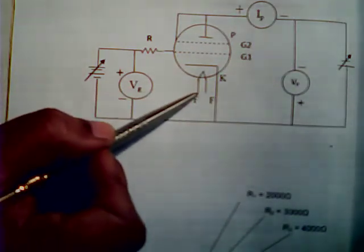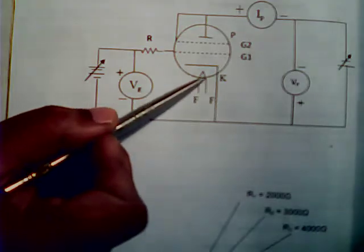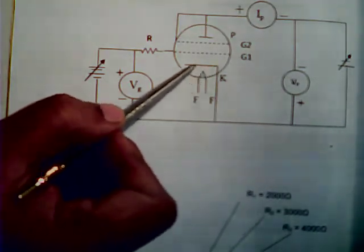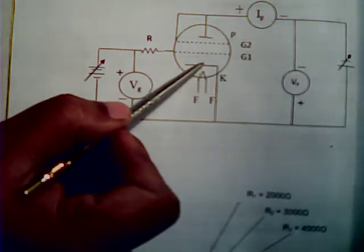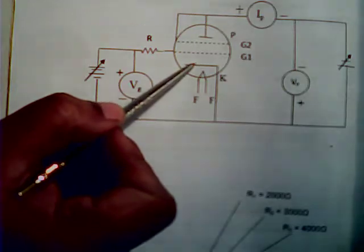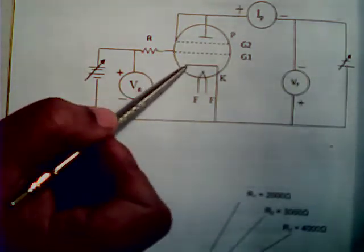Now there is a filament. When the filament gets heated up, it will eject electrons from the cathode. These electrons ejected from the cathode, if they have sufficient energy...